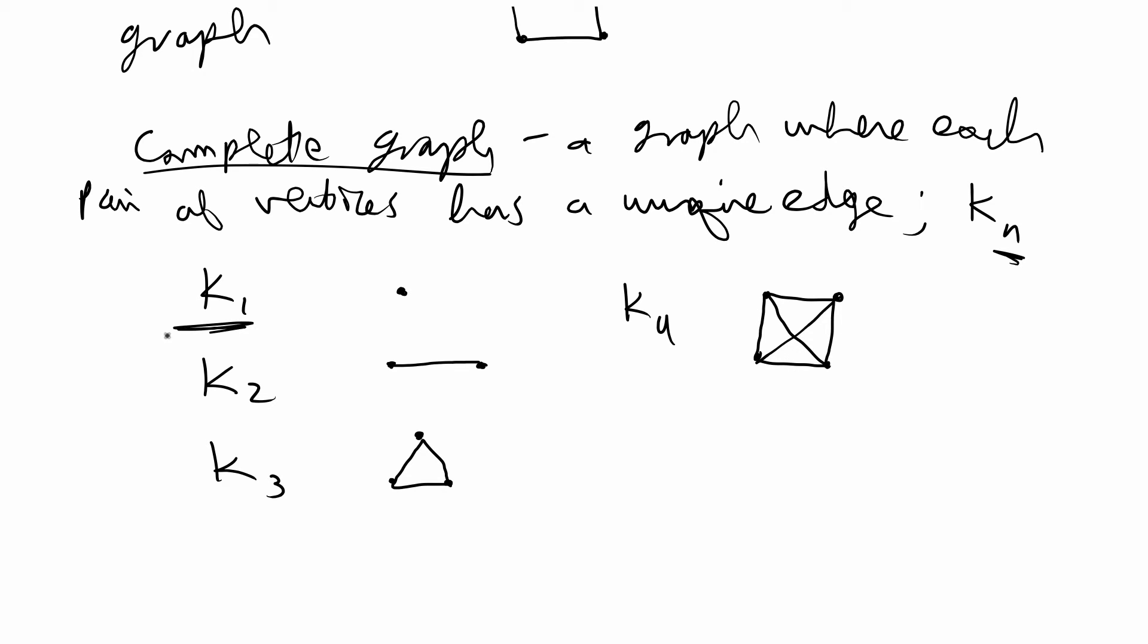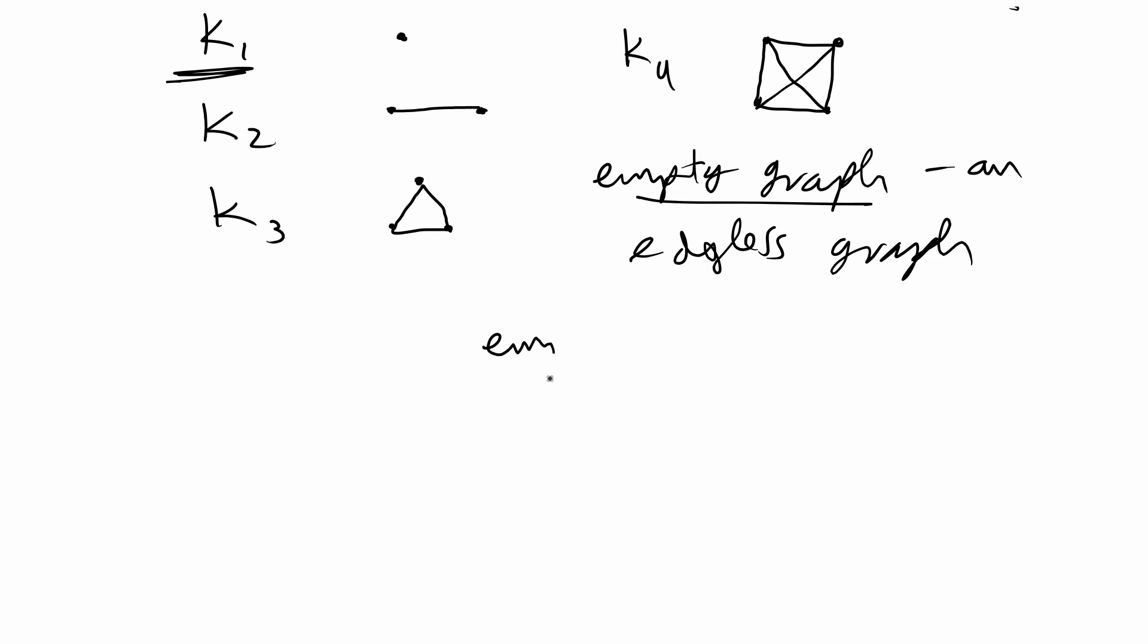K1 is considered a trivial graph and it's also an empty graph because it has no edges. By definition, an empty graph is an edgeless graph and we usually say an empty graph on N vertices where N is the number of vertices.